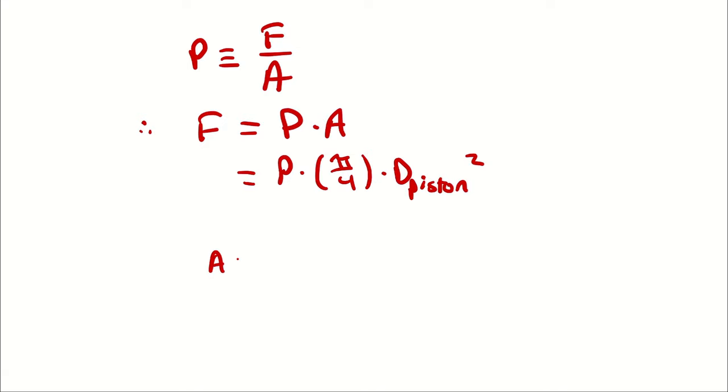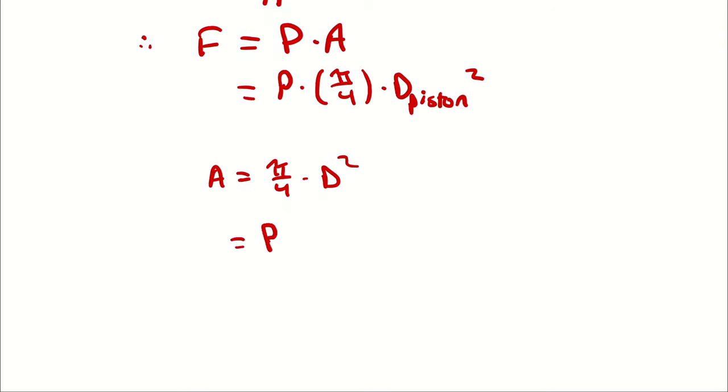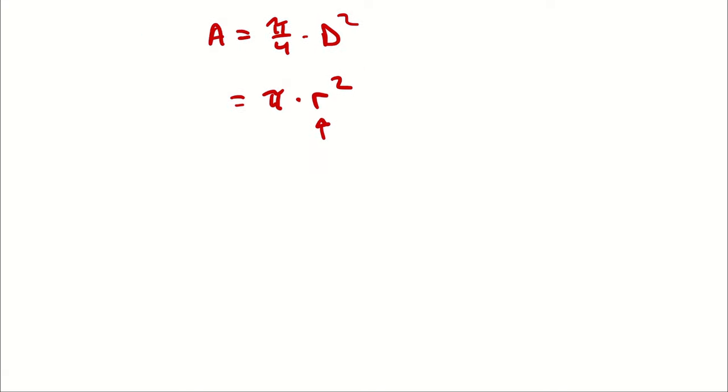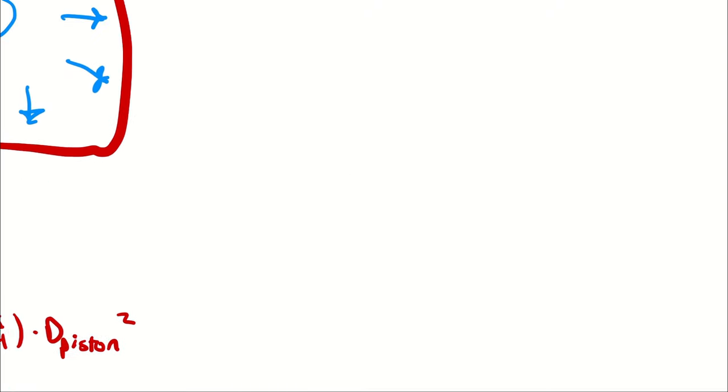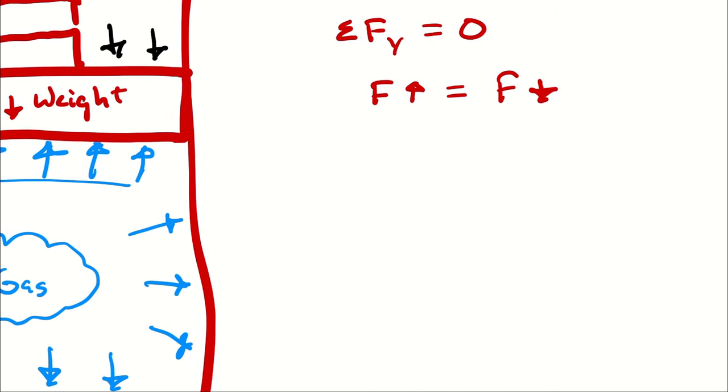Again, that was area of a circle is pi over 4 times diameter squared. It's the same as pi r squared. It's just that we happen to have diameter in this problem, therefore I'm substituting in radius is diameter over 2, distributing the square, and taking 2 squared and writing it as 4.